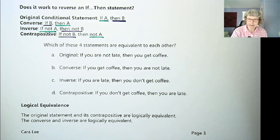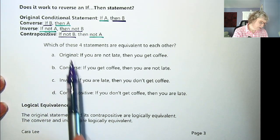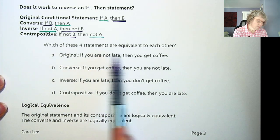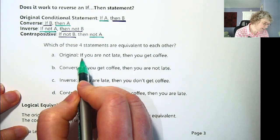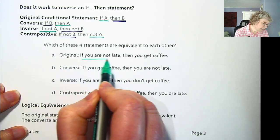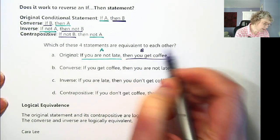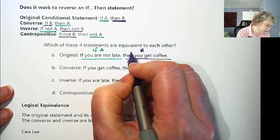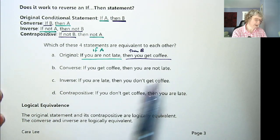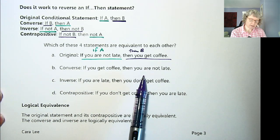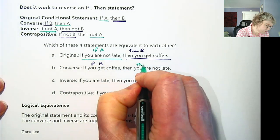Let's try an example. We've got the four statements here: the original, the converse, the inverse, and the contrapositive. We're going to look at which ones are equivalent to each other. The original is: if you are not late — that's our A — then you get coffee — that's our B. So if A, then B. The converse is: if you get coffee, then you're not late — that's if B, then A.